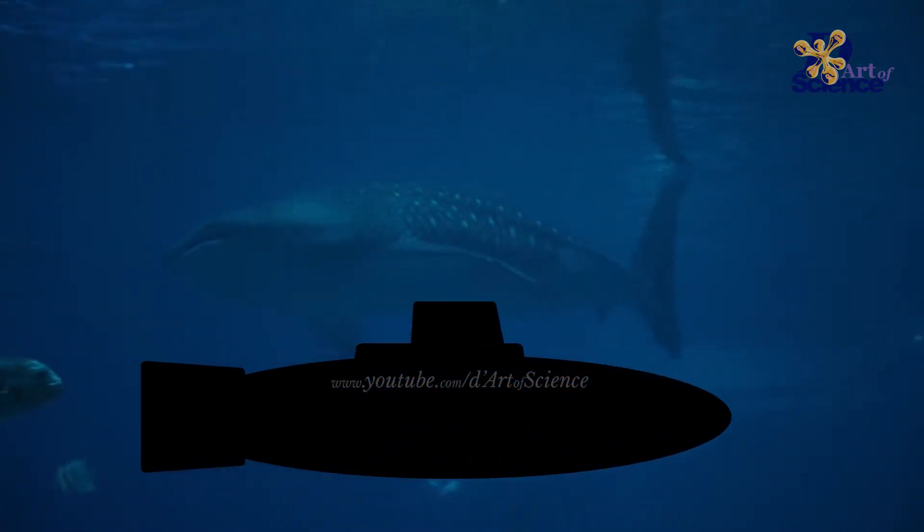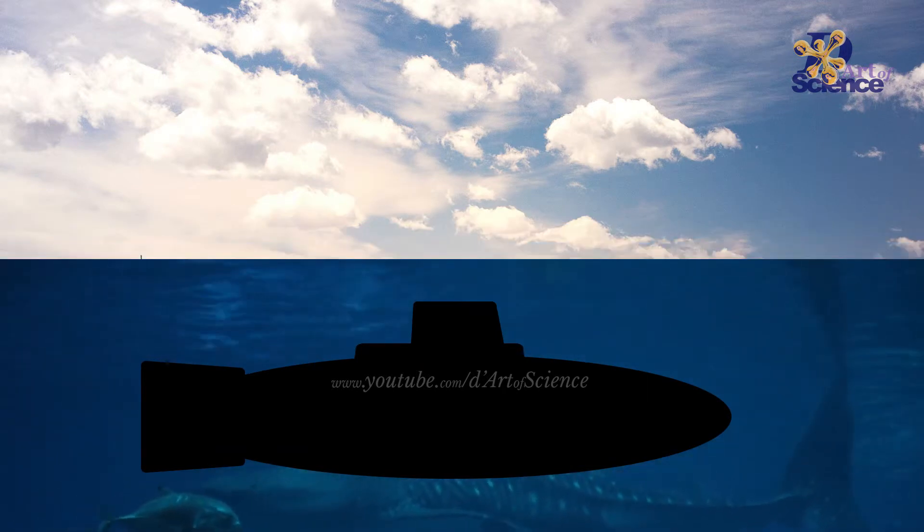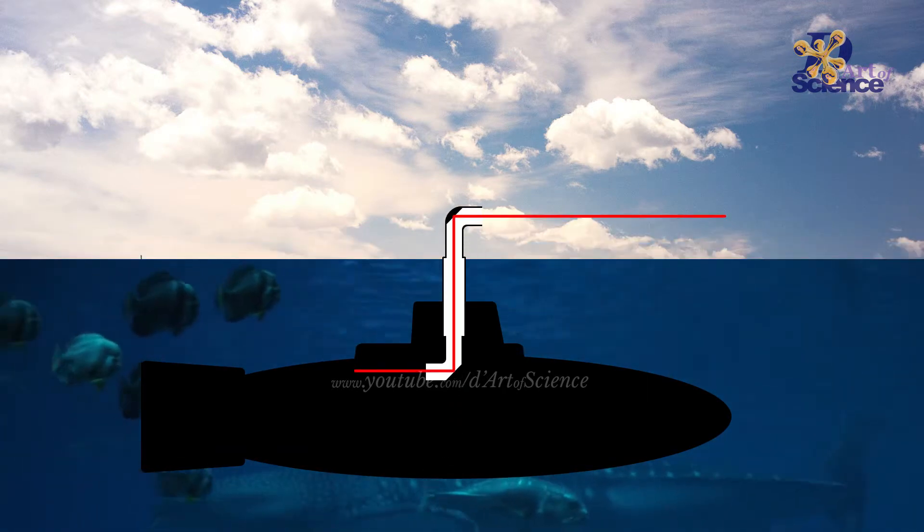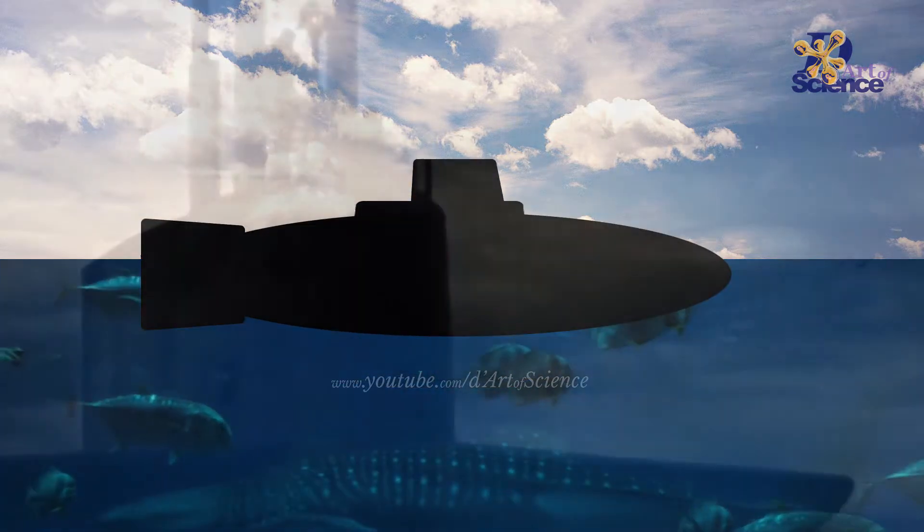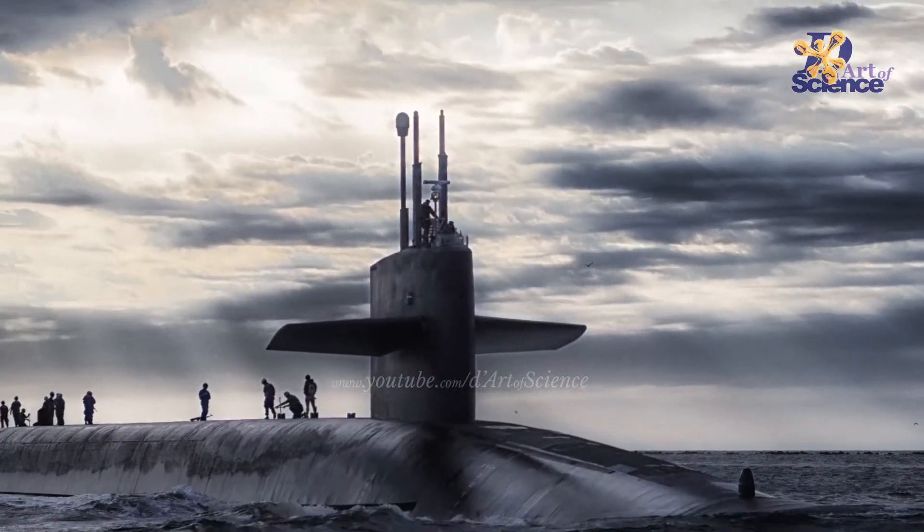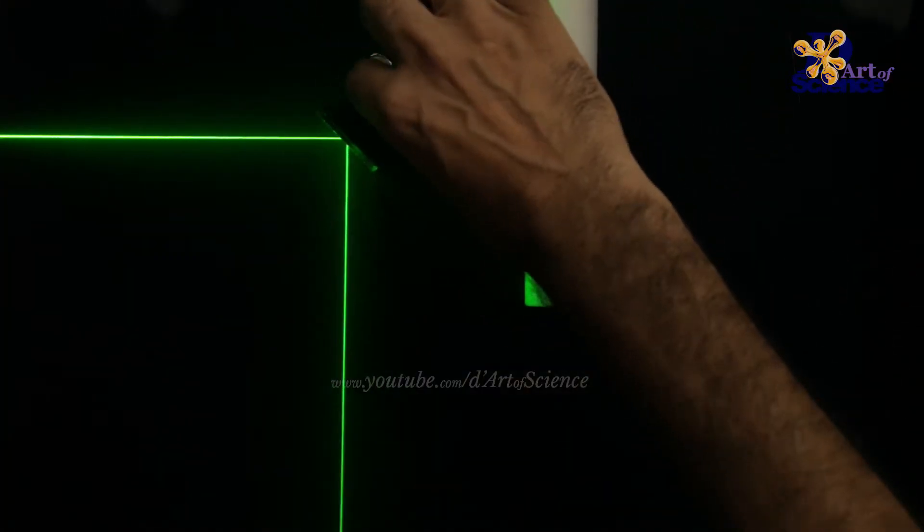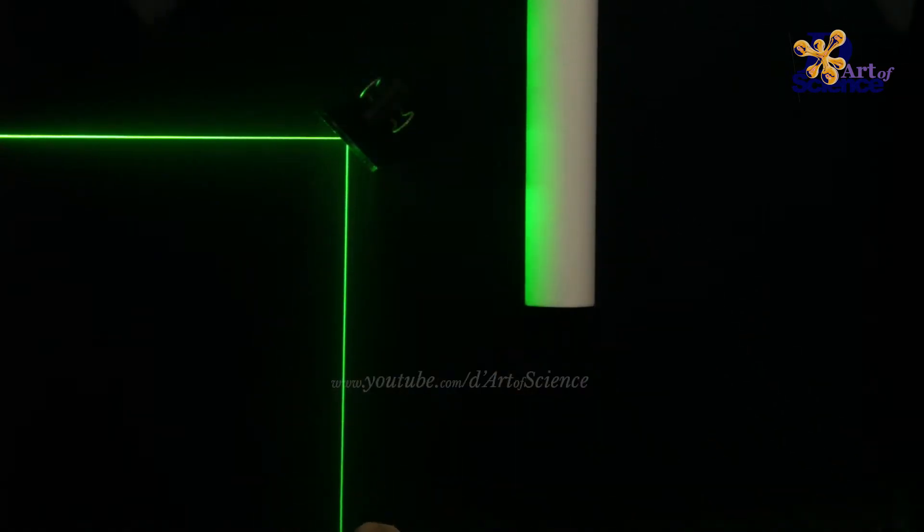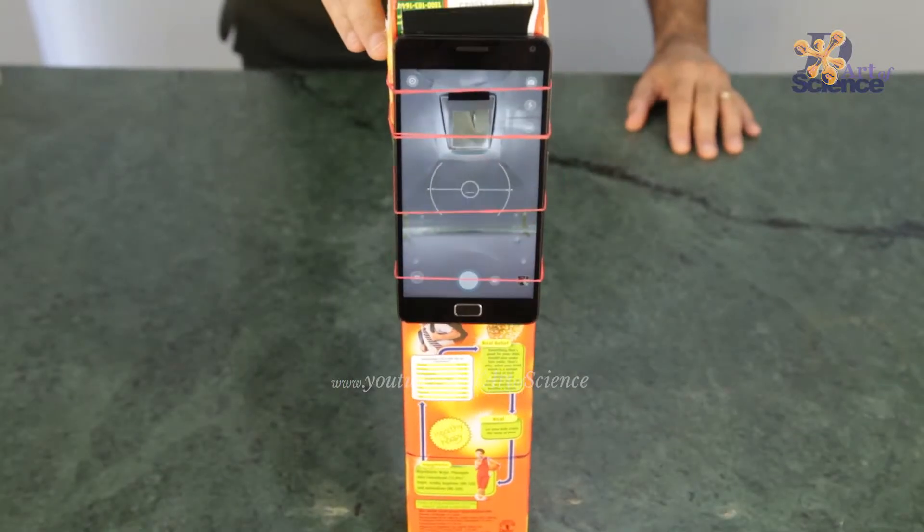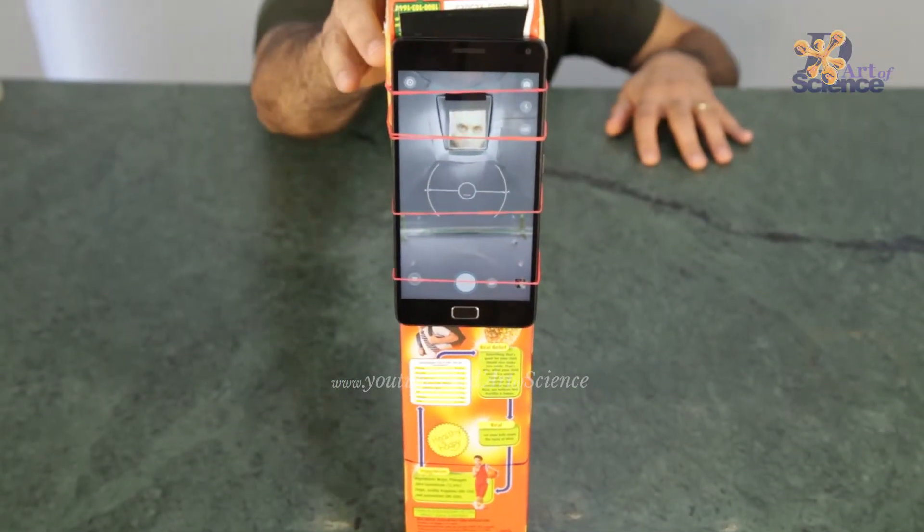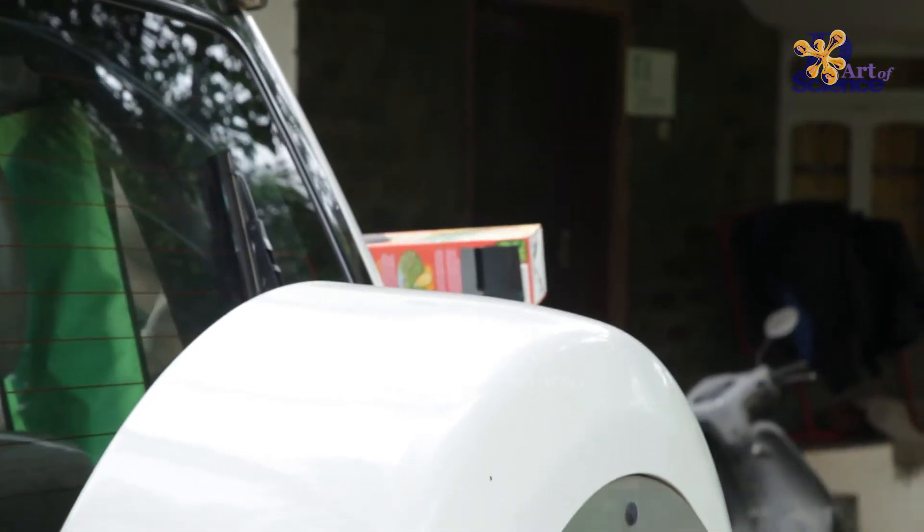Periscopes are used in submarines so that the people inside could look above the water to see if there is any danger before the submarine comes up. A periscope can see over or around an obstacle by using two mirrors that are parallel to each other. Let's see this. The light rays from the object hits the first mirror and then it gets reflected and hits the second mirror and then it comes to our eyes. On the channel I have a good DIY project of a periscope as well. In case you want to make it, you can follow the link in the description.